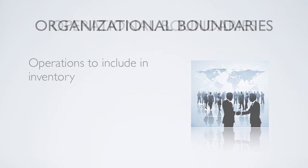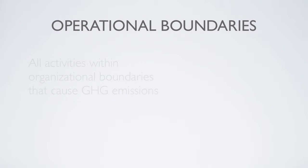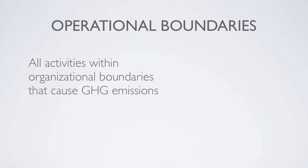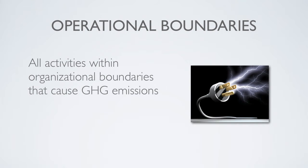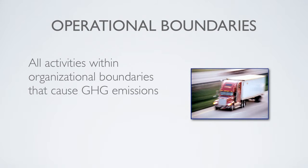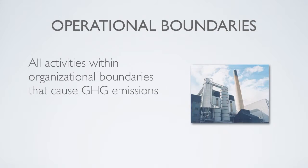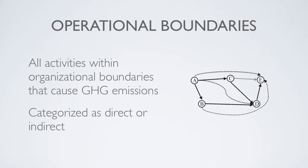Finally, the company must consider all the activities within its organizational boundaries that cause greenhouse gas emissions. These may include electricity use, business travel, product and material distribution, and the use of furnaces, boilers, generators, and incinerators. Once these activities have been identified, they must be categorized as either direct or indirect emissions, and the company must decide which of its indirect emissions it will account for. This process is known as setting operational boundaries.